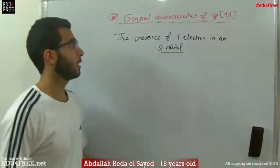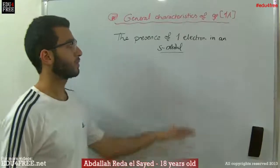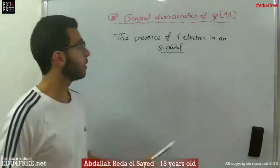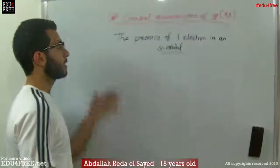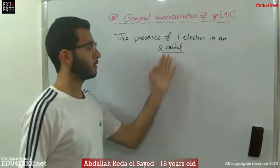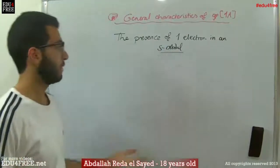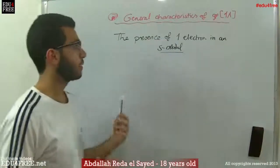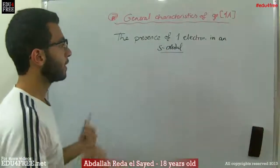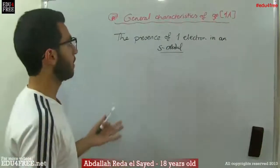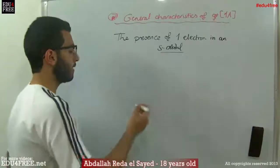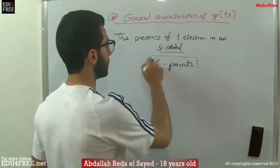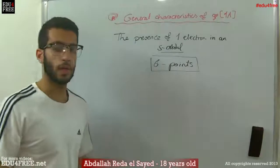We are going to begin talking about the general characteristics of Group 1A elements of the S block. A key characteristic is the presence of one electron in an S orbital — all of these elements end with an S orbital carrying just one electron. Here we have six points that are related to this characteristic of Group 1A elements.